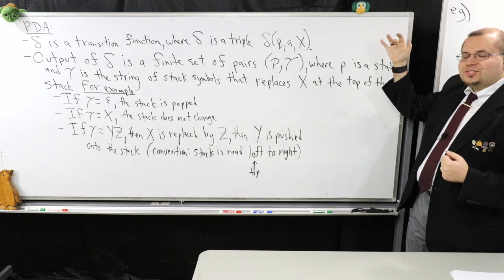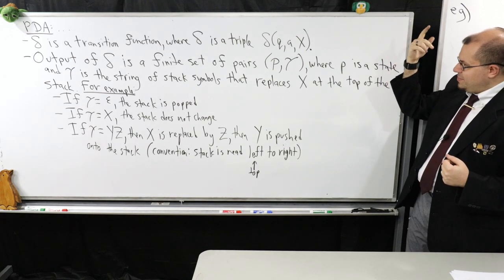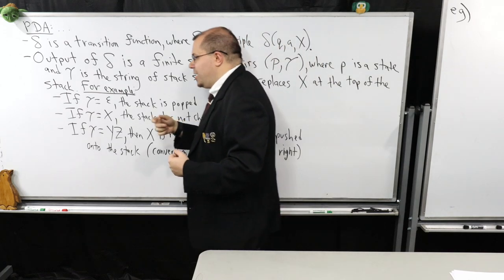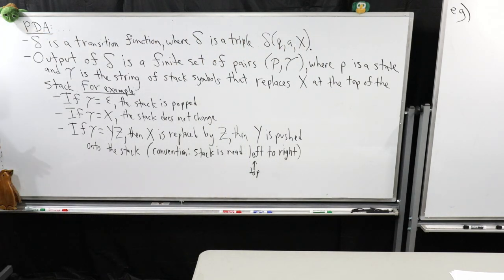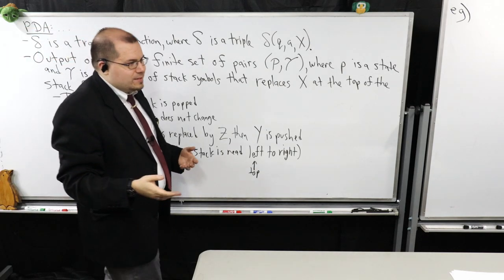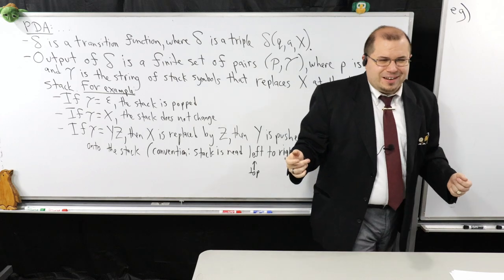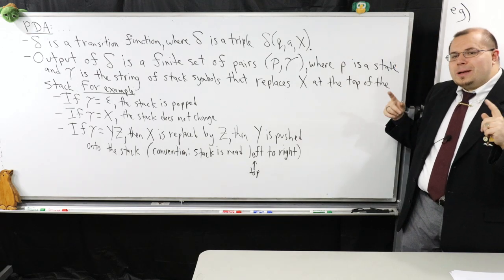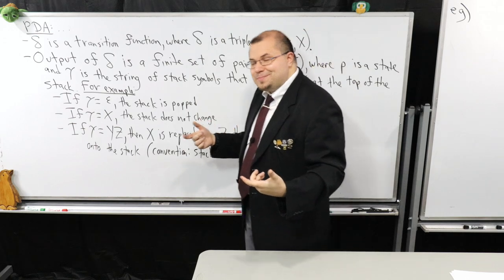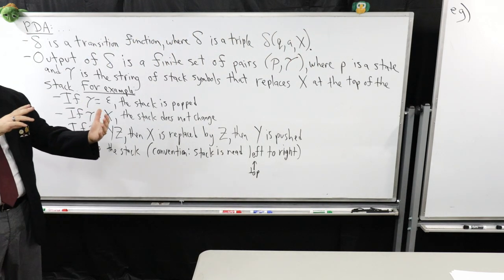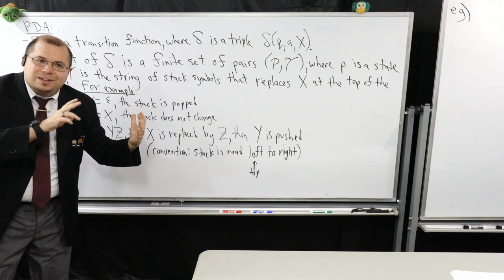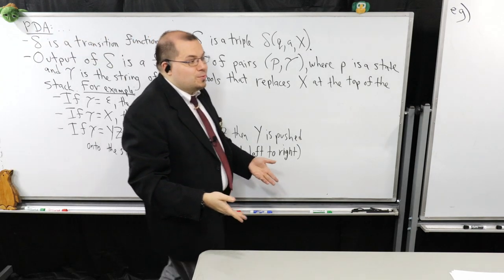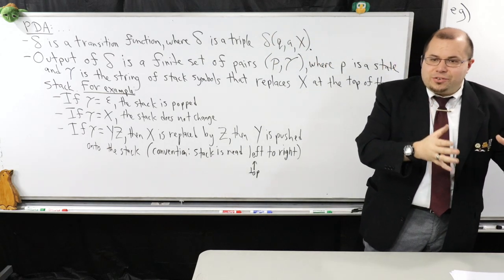Last day I started defining what a pushdown automata was, but I stopped right at where I was talking about what the output of the transition function is. In the Epsilon NFA, we had it where we returned a set of states, and we permitted epsilon moves. In the PDA, we also have the stack, so we have a description that depends on a state and the current state of the stack — there are two things in play.